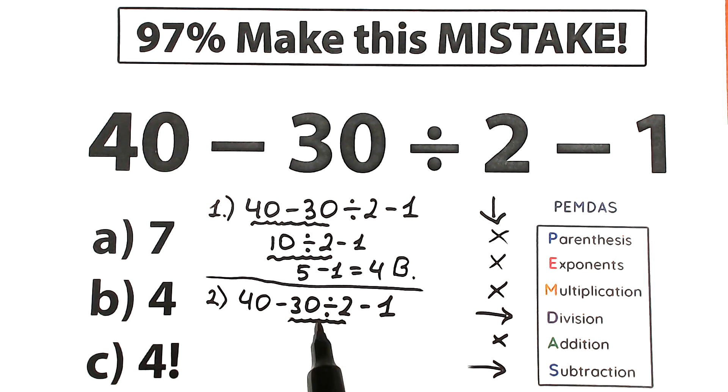So division we have right here, so we should divide 30 divided by 2, which is equal to 15. So 40 minus 30 divided by 2 equal to 15, and minus 1.